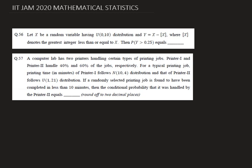Let's try the first one. Let X be a random variable having Uniform(0,10) distribution and Y equals X minus ⌊X⌋, where ⌊X⌋ denotes the greatest integer less than or equal to X. We need to find the probability that Y is greater than 0.25.